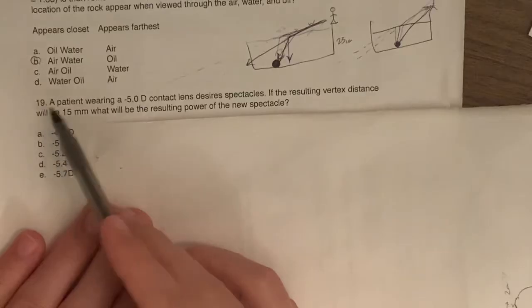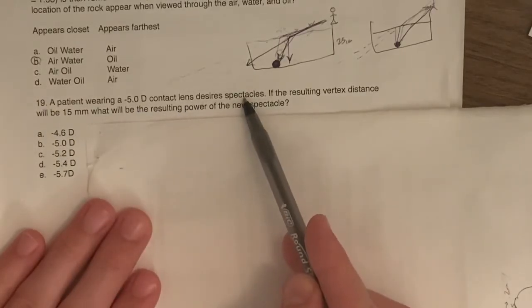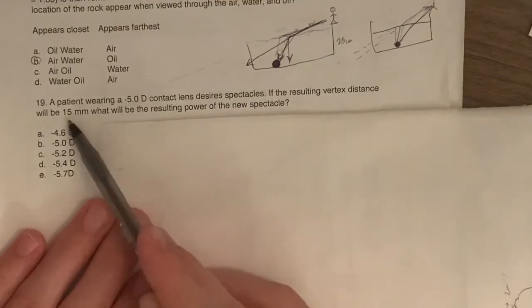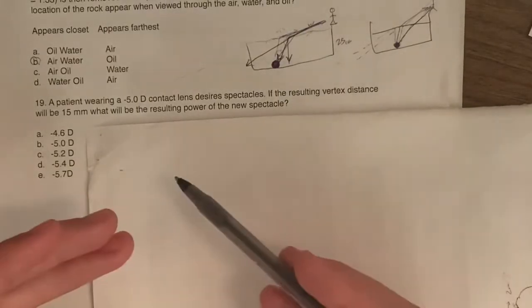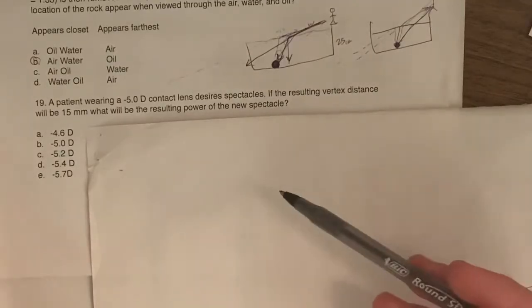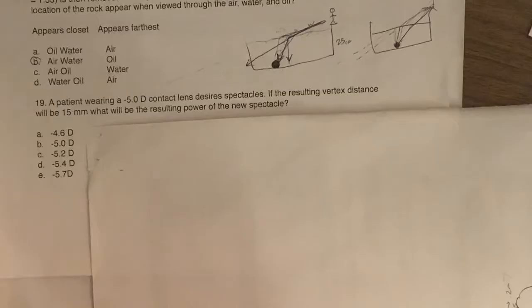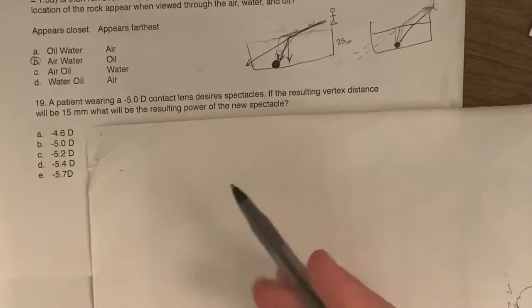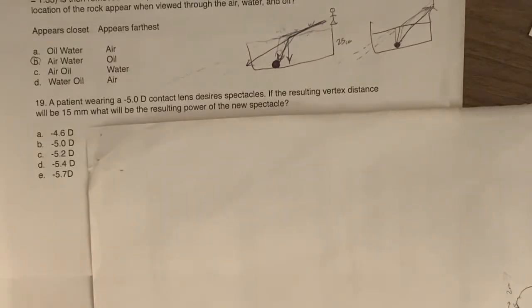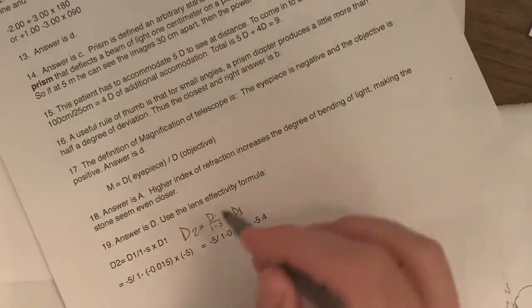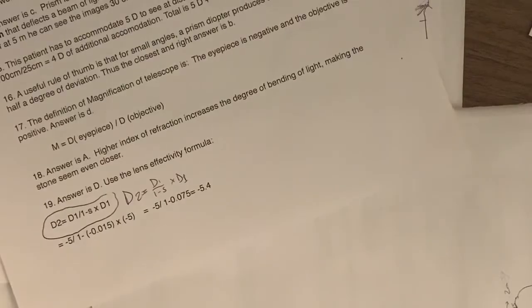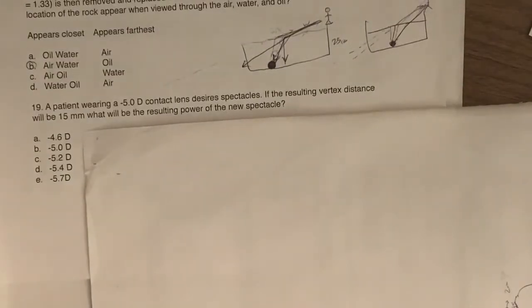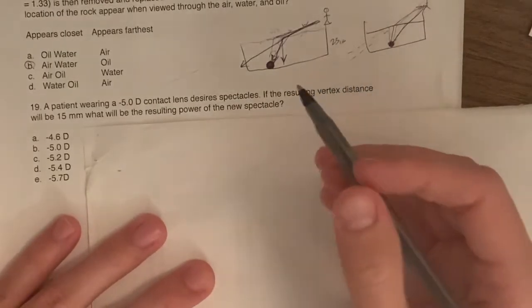So number 19, you got a patient with a minus five contact lens wants to get the same correction, but in glasses. The vertex is 15 millimeters. So what's the, what's going to be the new power of the glasses? So for this, what I like to do is just take my vergence U plus D equals V knowledge and apply that to this concept of the far point rule. If you're into just strictly using formulas, you can do what's called the lens effectivity formula, but I'm not too familiar with it. I'll give you a quick glimpse of it. This is that formula here. Like I said, I don't have to me, it's just easier to use the vergence stuff that we've already reviewed.